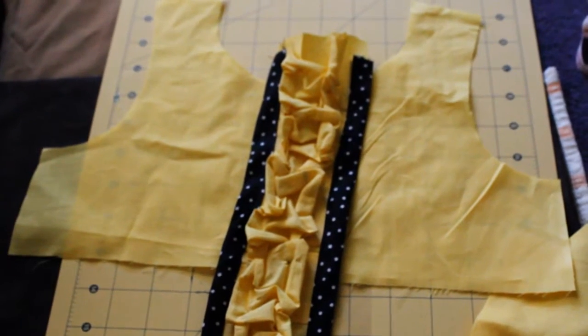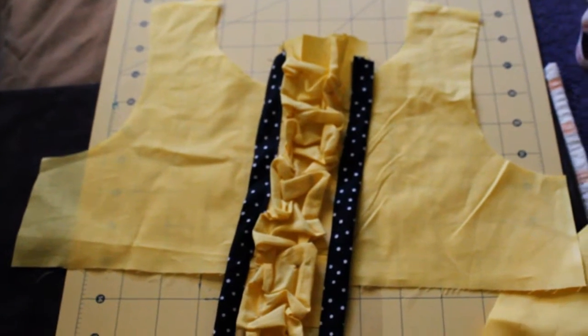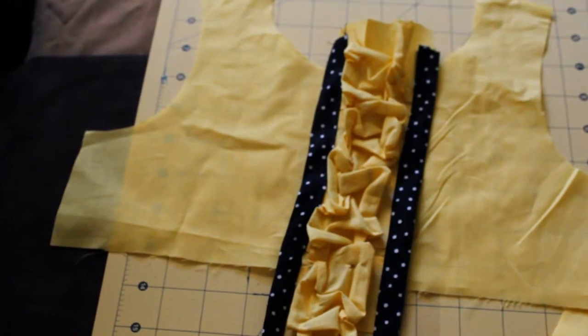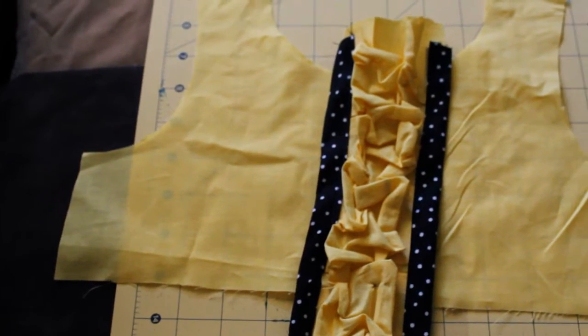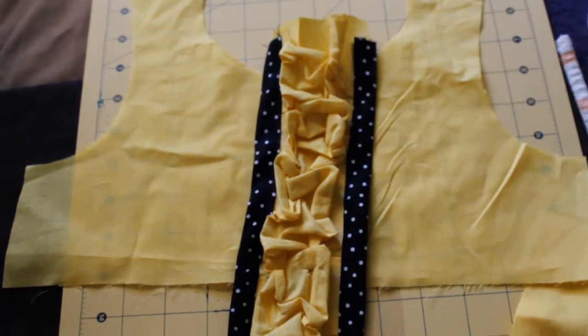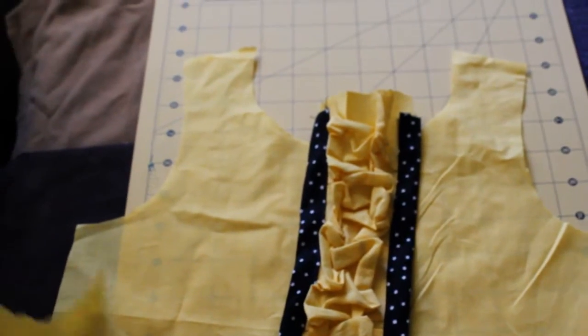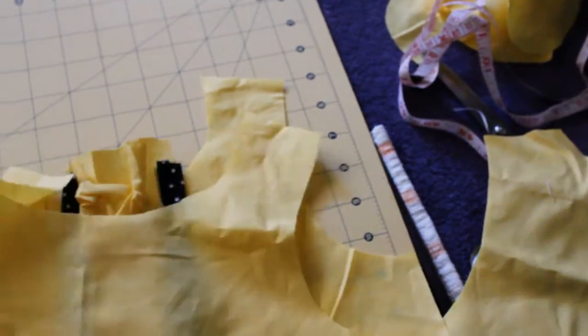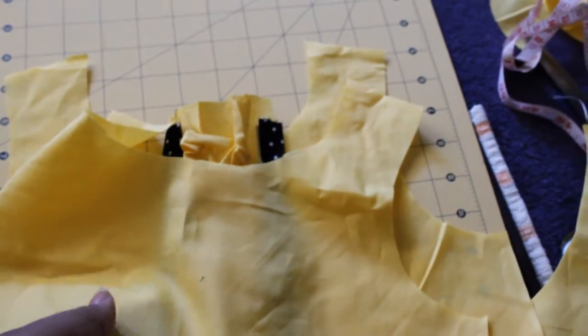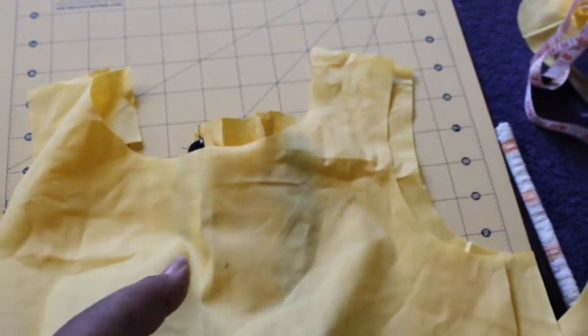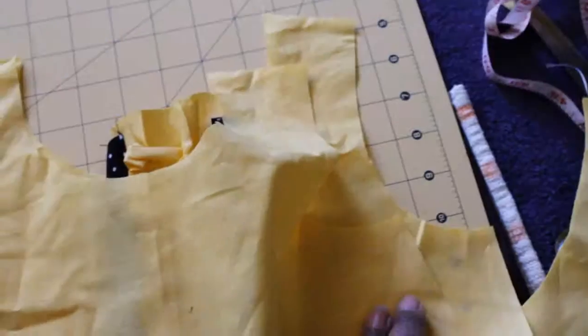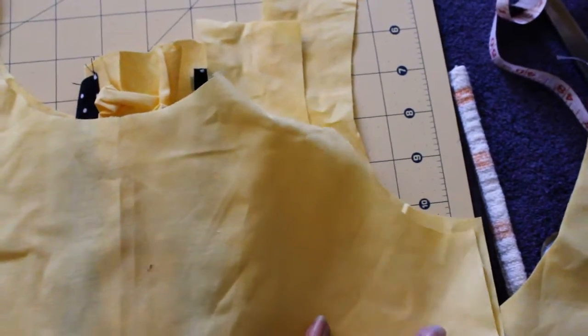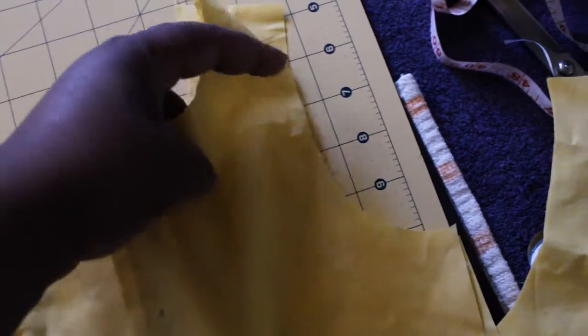I just cut out the pieces of my basic bodice and as you can see it's actually quite thin and see-through, so I decided to go ahead and make another one to line it. The bodice will be lined in the front and it won't be in the back.